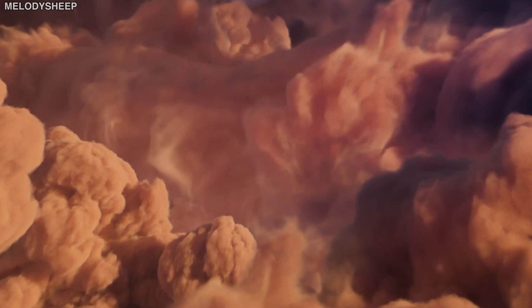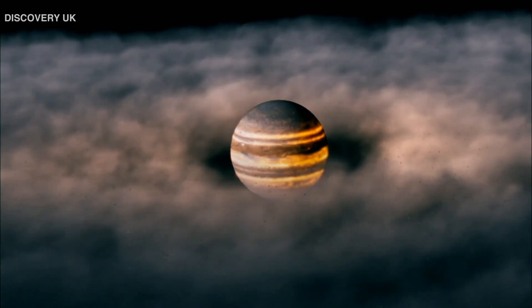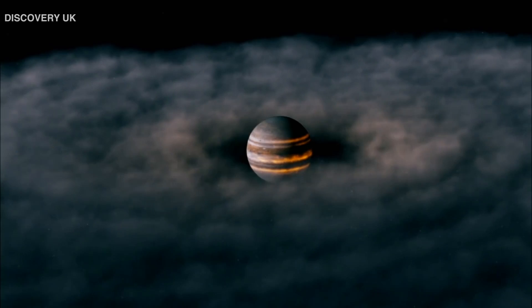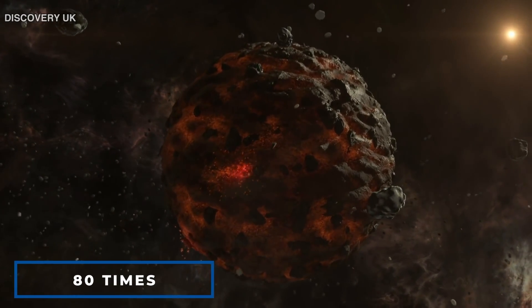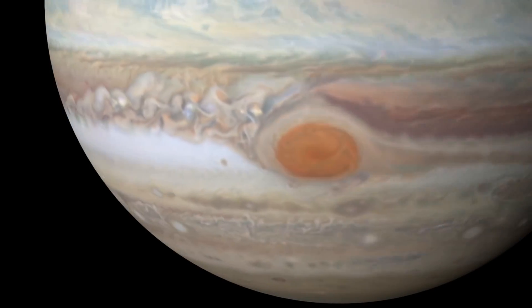Because it was formed from gas left over from the sun's birth, Jupiter was most likely the first planet to develop in the solar system. And if it had been roughly 80 times more massive during its birth, it would have expanded into its own star.